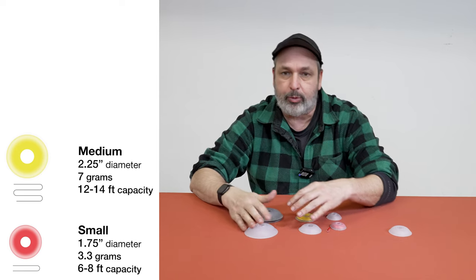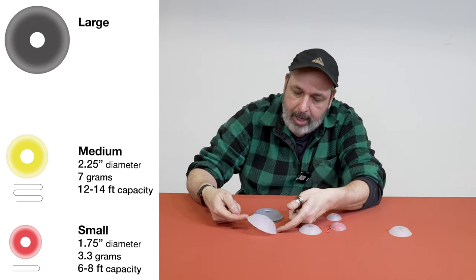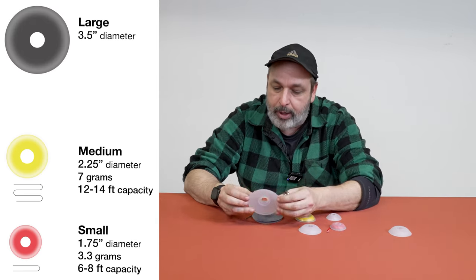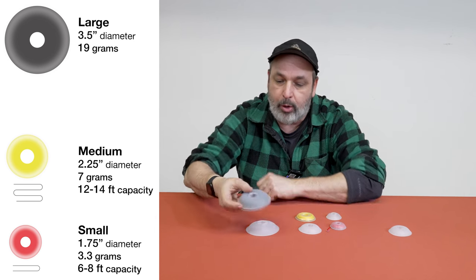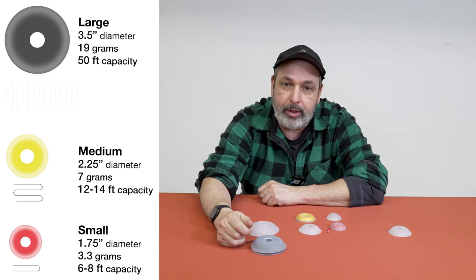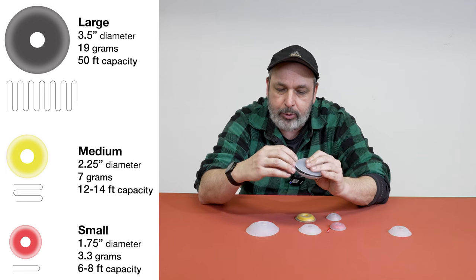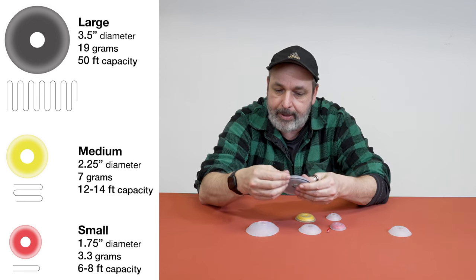So the newest one, which measures three and a half across, weighs 19 grams and holds, this is 50 foot of cord in here. The cord is 1.75 zing it.